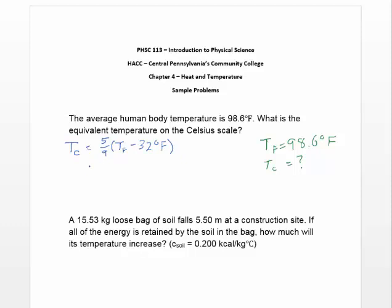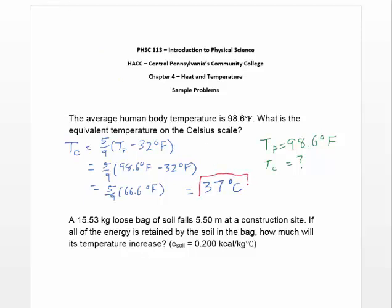Now we just put our number in: 5/9 times (98.6°F minus 32°F), which equals 5/9 times 66.6°F, which equals 37 degrees Celsius. So our body temperature is 37°C, compared to 98.6°F.